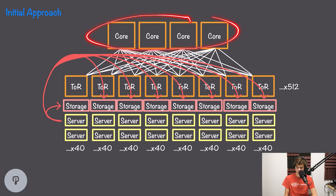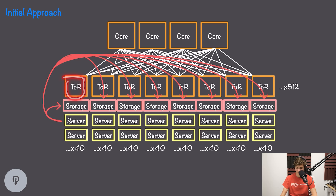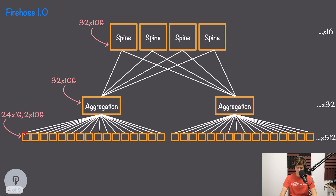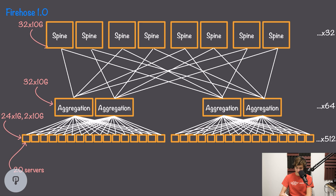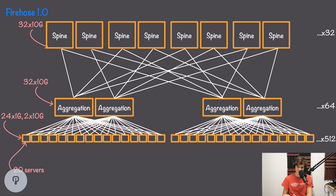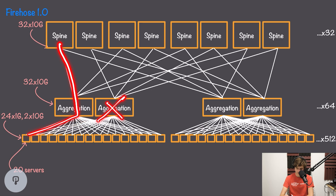To achieve this with the previous one-gigabit core switch architecture, we would have needed 40 core switches, with each top-of-rack switch connected to all 40. With the new architecture, each top-of-rack switch is only connected to a single aggregation switch, greatly simplifying the wiring. However, there's now a single point of failure — if the link to the aggregation switch fails, all servers in that rack lose connectivity. The solution was to double the network, adding another set of aggregation switches and spine switches connected to the same top-of-rack switches, giving each rack link redundancy.